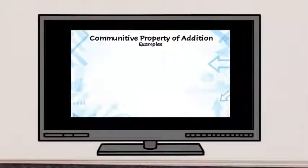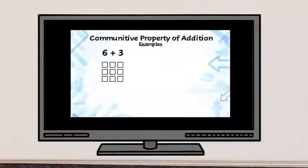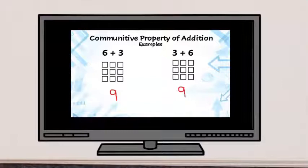Let's look at some examples of the commutative property. Let's look at 6 plus 3. If I start with 6 and then add 3, I get 9. If we switch the order to 3 plus 6, we start with 3 and then add 6, we still get 9.